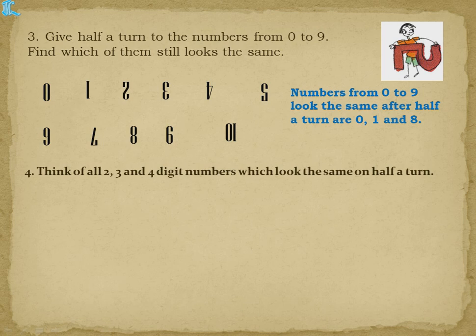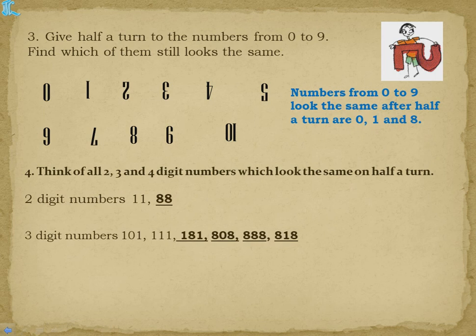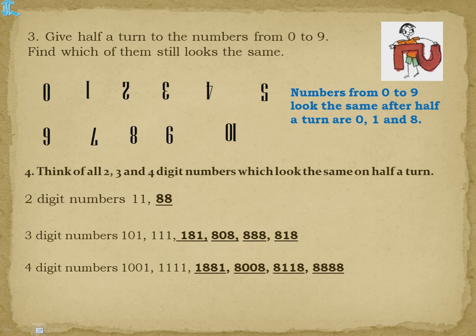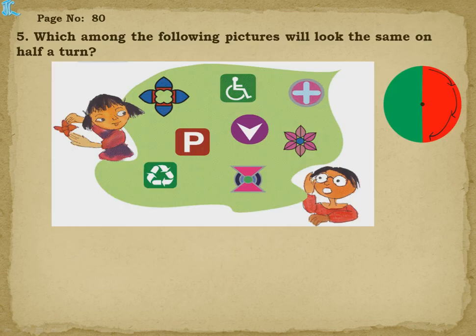Now think of 2, 3, and 4 digit numbers that look the same after half a turn. Since only 0, 1, and 8 look the same individually, we build numbers from these digits. Two-digit numbers: 11 and 88. Three-digit numbers: 101, 111, 181, 808, and similar combinations. Four-digit numbers: 1001, 1111, 1881, 8008 — because reversing them should give the same number.